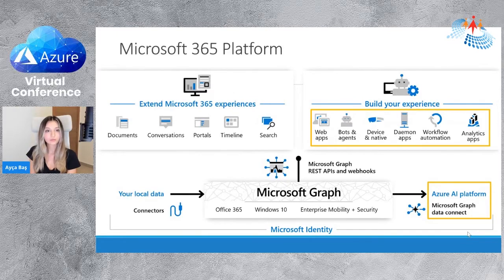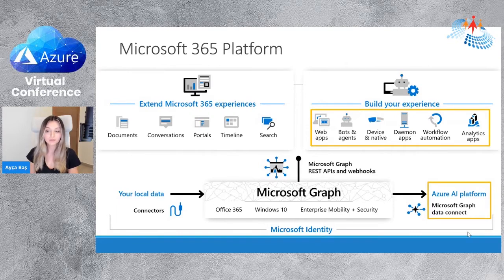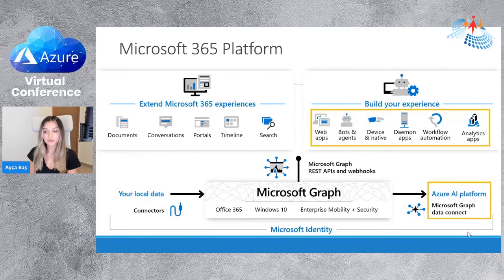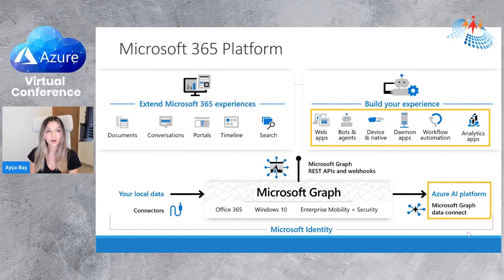Let's quickly have an overview of the M365 platform. M365 is quite big — we have lots of tools, documentation, and products to consume. Today we're going to discover what we can do with the data inside those products. Think about Microsoft Teams or Outlook — you use them day-to-day, and there's a huge amount of data in the background. By using that data, we can create great bot projects, web apps, daemon apps, workflow automation, or use the data for analytics, auditing, or business review purposes. To reach that data, we always use Microsoft Graph.